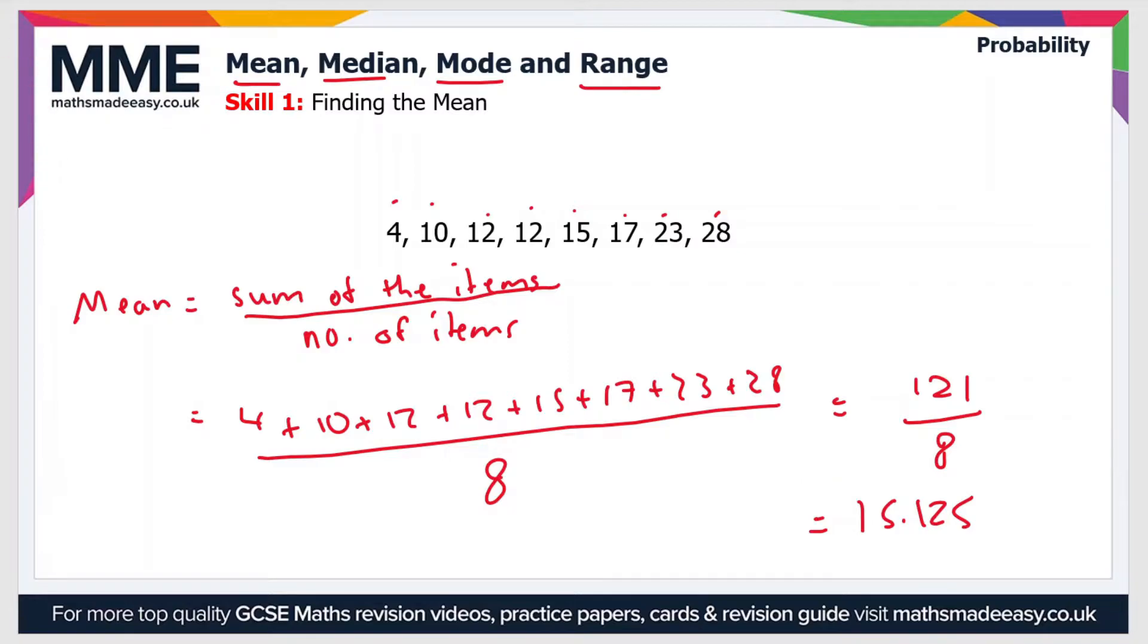So the main advantage of using the mean is that it uses all of the data. So we used every number here in our calculation. The main disadvantage is that it's highly affected by outliers. So for instance, if we had the number 45 on the end of our set here and we included this in the calculation, then this is likely to increase the value quite drastically.